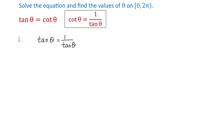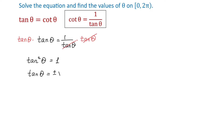In the next step we will multiply both sides by tangent of theta. On the right side tangent of theta will cancel, and now we have tangent squared of theta equals 1. Using the square root property, tangent of theta equals plus or minus square root of 1, or tangent of theta equals plus or minus 1.